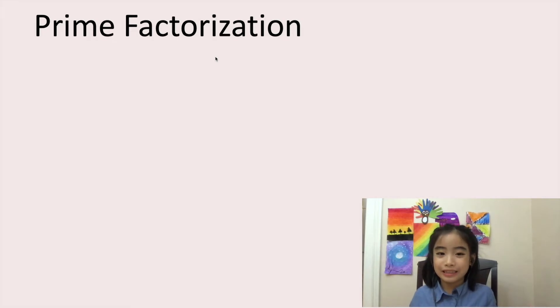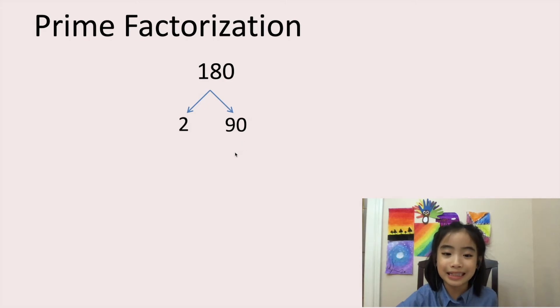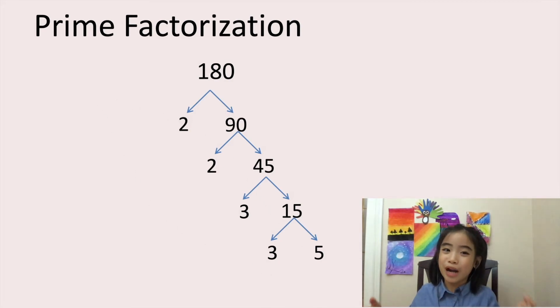So here we are going to have a non-prime number. Then we are going to split it into prime numbers. Here I have 180. We know that the smallest prime number is 2. So I have 2 and 90. Since 90 is not a prime number, let's split 90 into 2 and 45. And here, 45, we can split into 3 and 15. And 15 isn't a prime number. So let's split 15 into 3 and 5. We broke 180 into 2 times 2 times 3 times 3 times 5. So as you can see, these are all prime factors. So this process is called prime factorization.